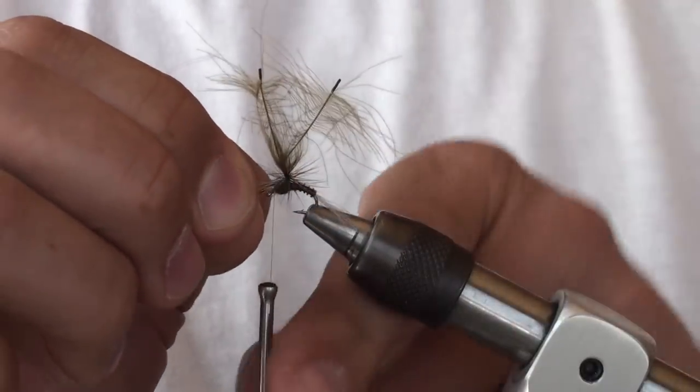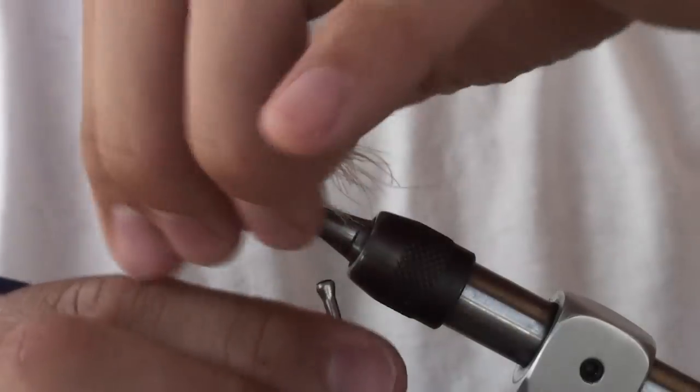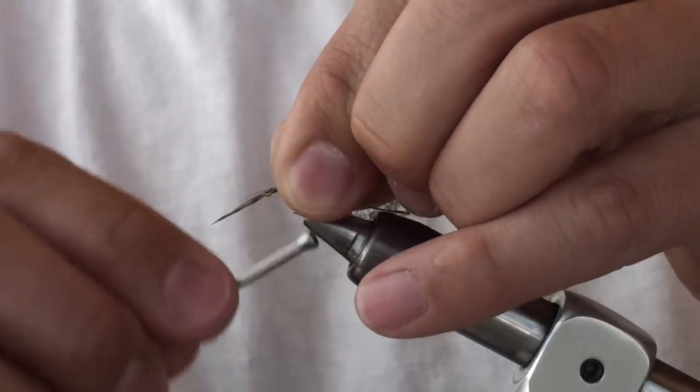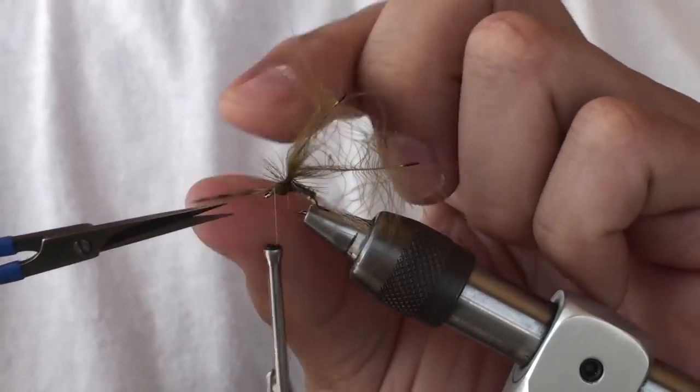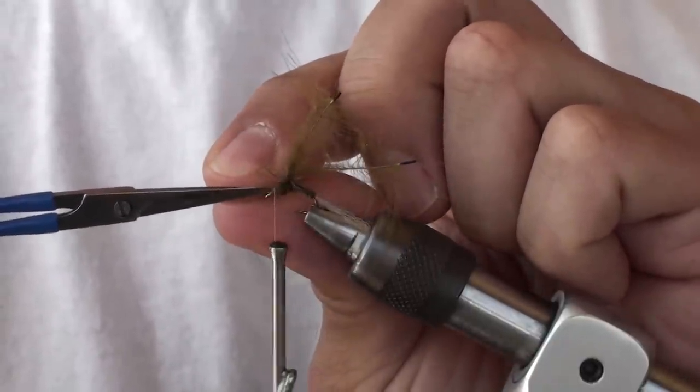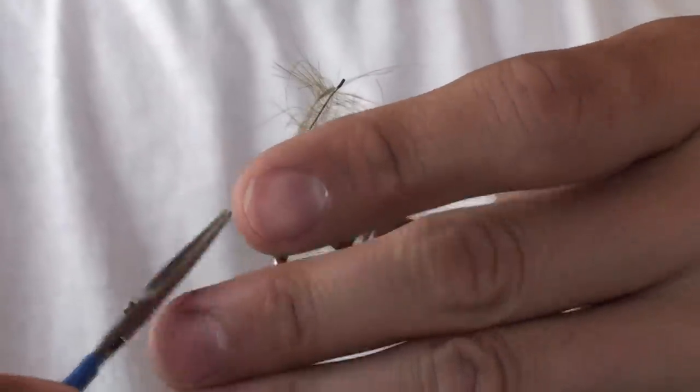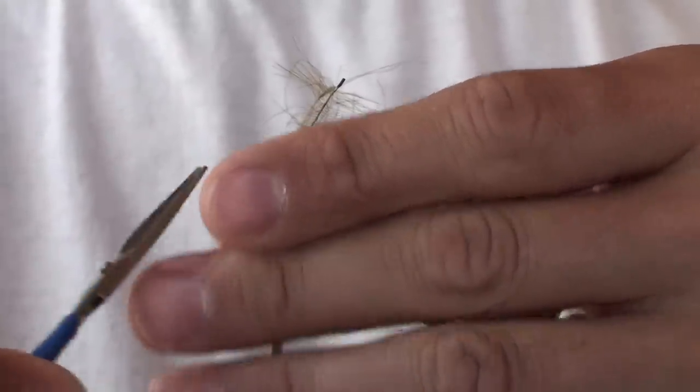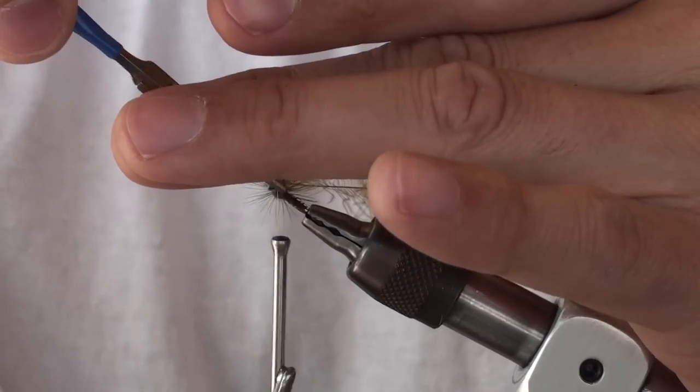Now I can tie that hackle down behind the eye. Stroke all the fibers you can, strike them all back, and tie that down firmly. Now I can clip off the excess. There we go. Clear the eye if there's any fibers that may be blocking the eye. Now's a good time to get those out of the way. Otherwise, you're going to be on the stream trying to thread this, and you're going to have a tough time.